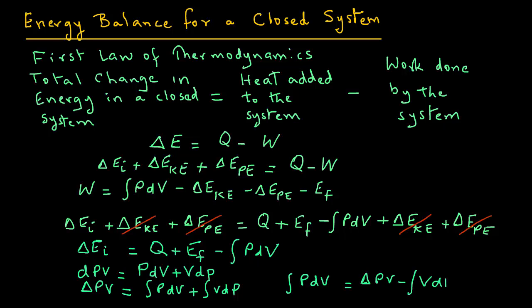So delta EI equals Q plus EF minus delta PV plus the integral of VdP. And we can then again rearrange the terms as delta EI plus delta PV equals Q plus EF plus the integral of VdP.